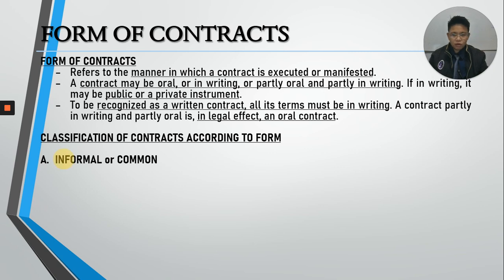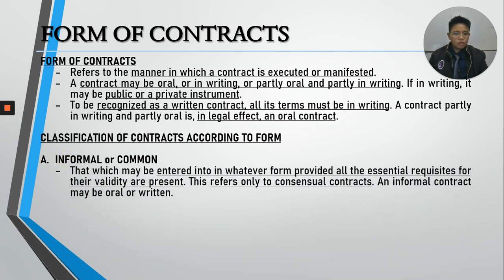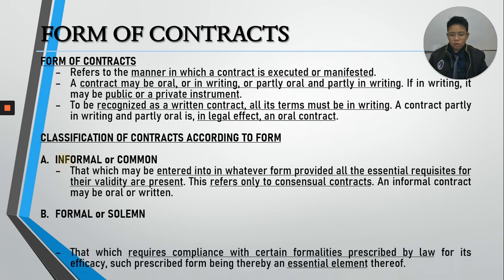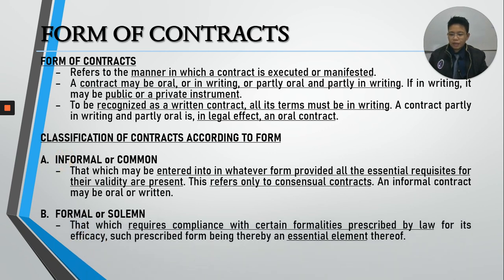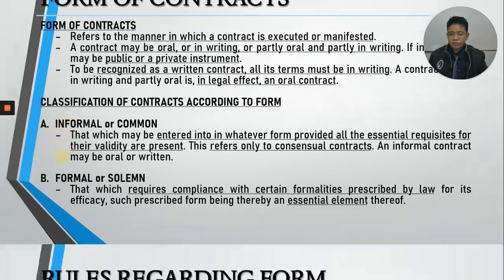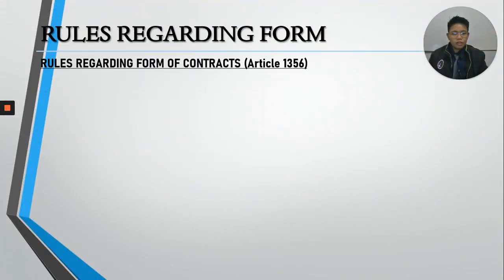A contract may be informal or common — these contracts can be entered into in whatever form, as long as all the essential requisites for validity are present. This applies only to consensual contracts, which may be verbal or written. There are also formal or solemn contracts, which require compliance with certain formalities prescribed by law for validity. In these contracts, form is an essential element — in addition to cause, object, and consent, a certain form is required.